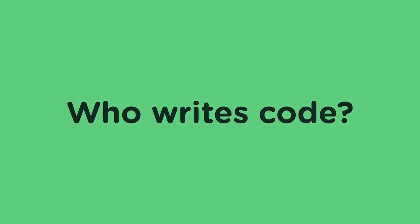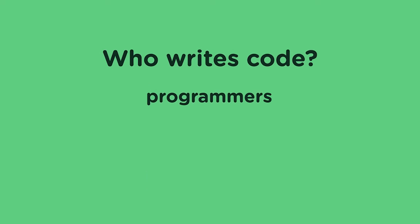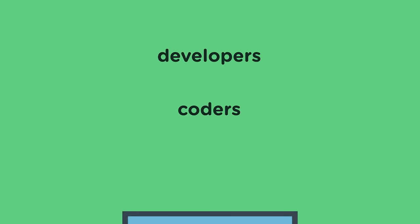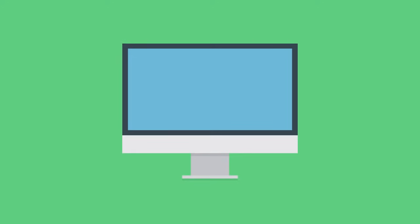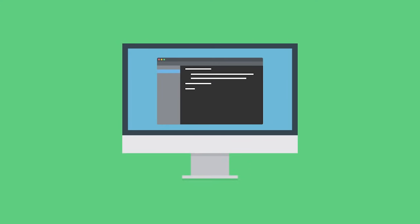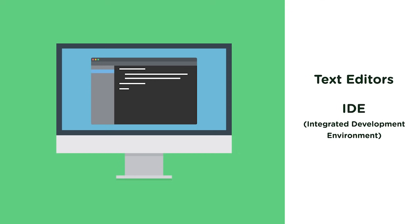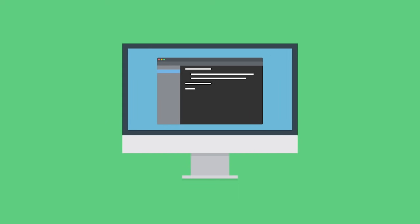So, who writes code, and how do they do it? The people that write code go by many names — sometimes they're called programmers, or developers, or coders — and they usually write code on a computer using special apps. Sometimes these apps are called text editors, or IDEs, which means integrated development environment.